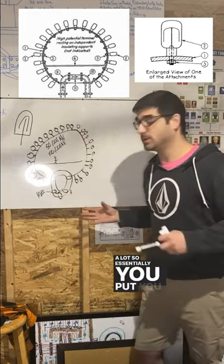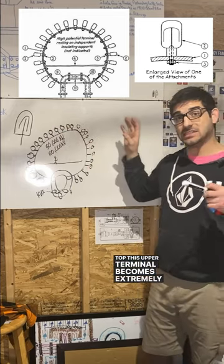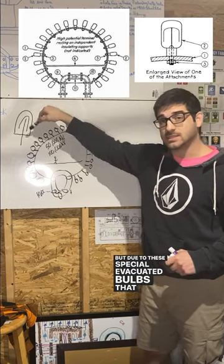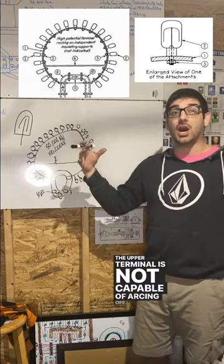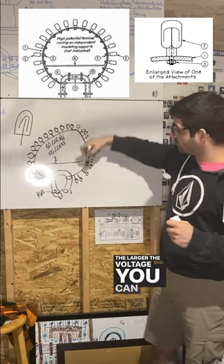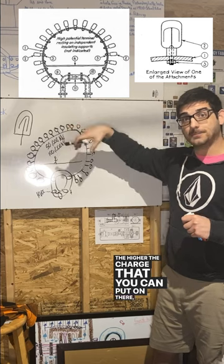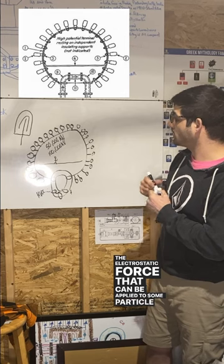So essentially, you pump up the electrons to the top. This upper terminal becomes extremely negatively charged, but due to these special evacuated bulbs that Tesla designed, the upper terminal is not capable of arcing off. The larger the voltage you can bring this upper terminal to, the higher the charge that you can put on there, the larger the electrostatic force that can be applied to some particle.